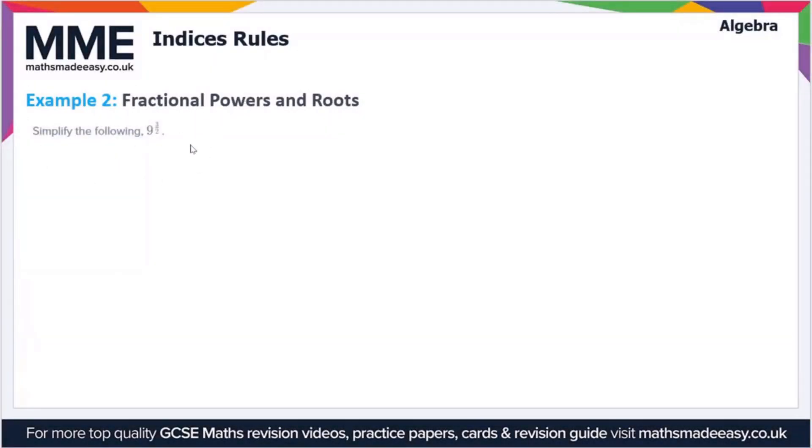Moving on to the second example, we have to simplify the expression 9 to the power 3 over 2. Now there are two ways we can write this: we can either write the square root of 9 cubed, or we can write this as the square root of 9 in brackets and then cube that value.